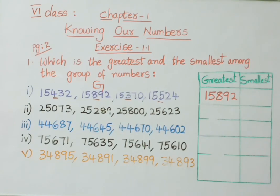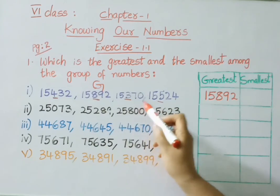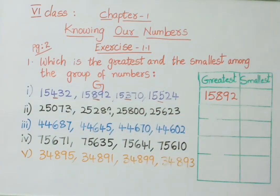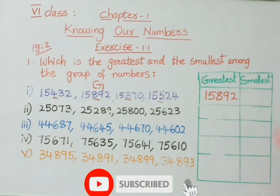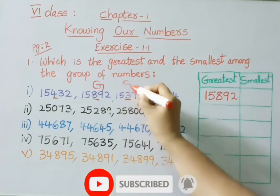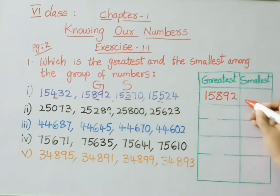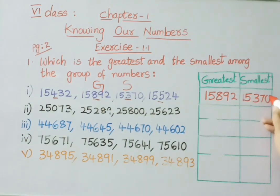Now see which is the smallest among the remaining three numbers: 400, 300, and 500. Which is the least? 300 is the least, so 15,370 is the smallest number.